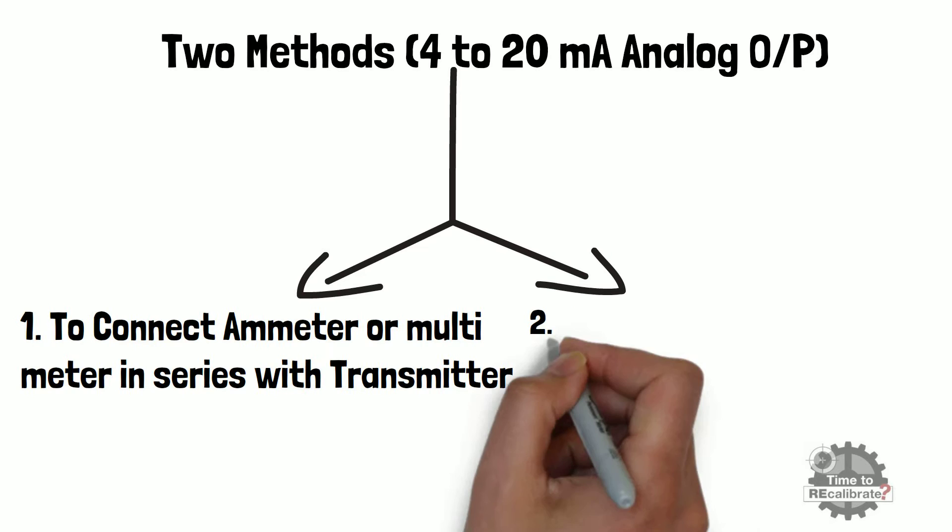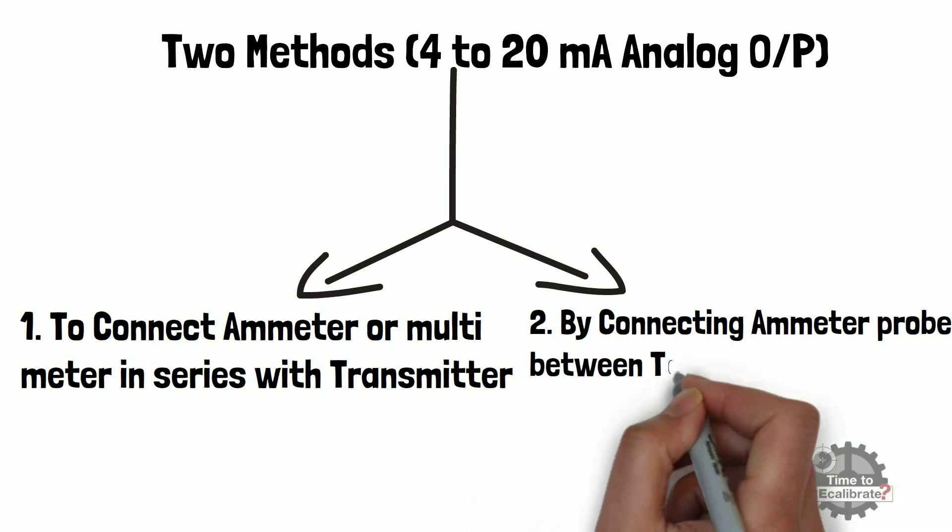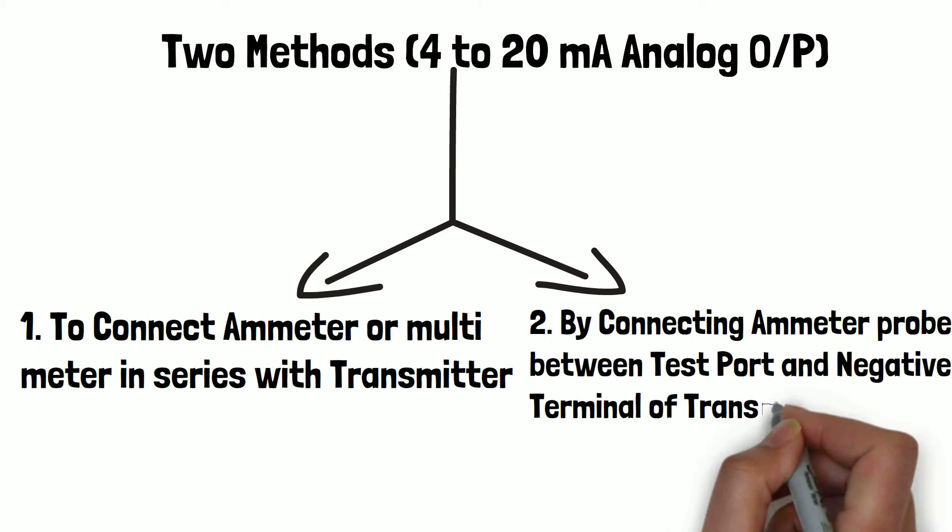In second method, we need to connect ammeter probe between negative terminal and test terminal of transmitter. However, this method can only be used if transmitter has test port. In other words, if transmitter does not have third port or test port, then we need to use first method in order to measure analog output.